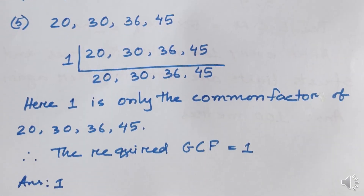For number 5 — the last problem — we have 20, 30, 36, and 45. We look for common prime factors among all four numbers. There is no common prime factor shared by all four numbers. Only 1 is common to 20, 30, 36, and 45. Therefore, the required GCF is equal to 1. The answer is 1.